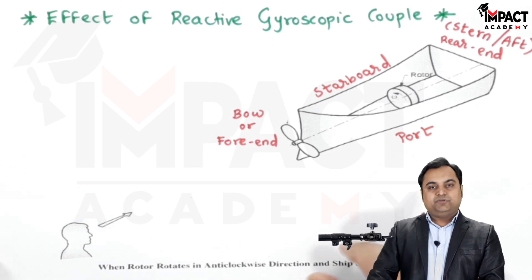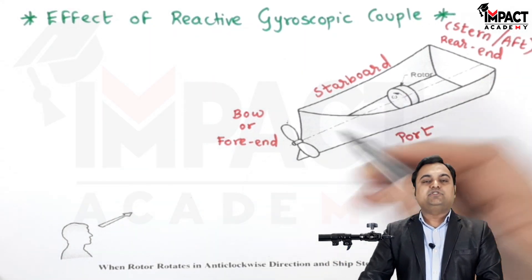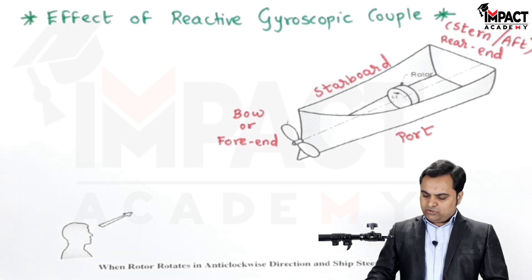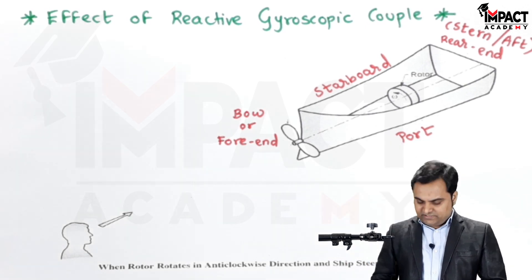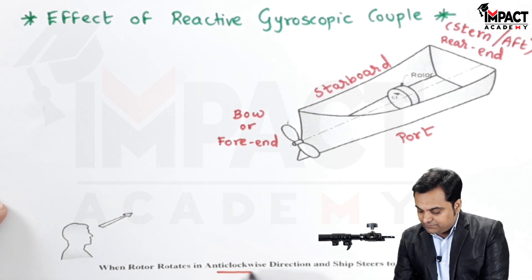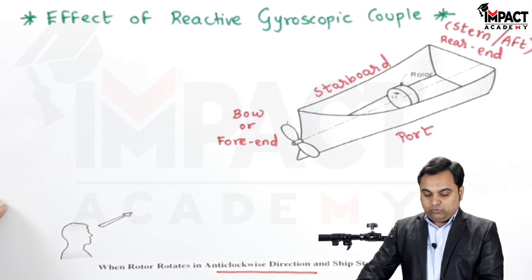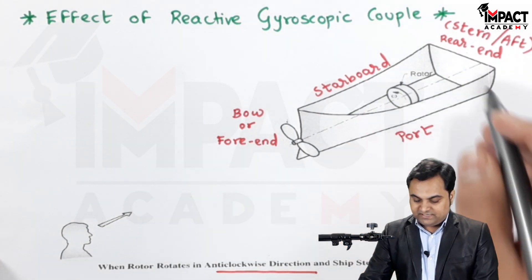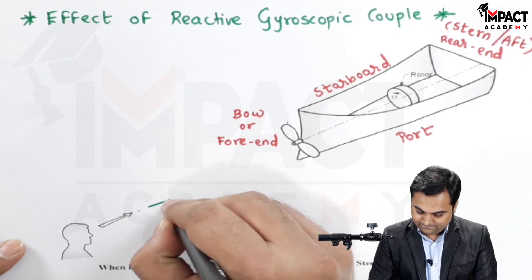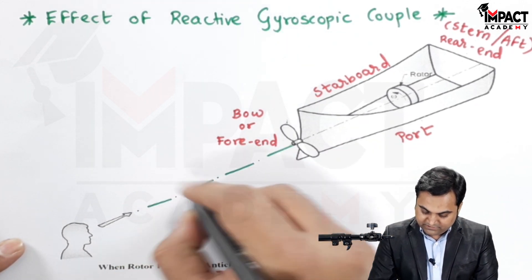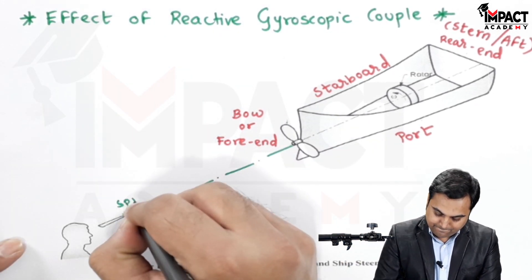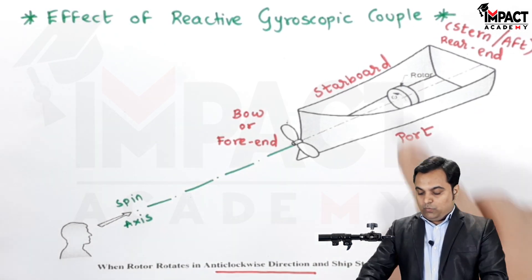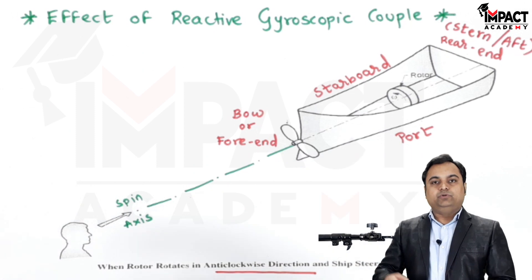The ship has a rotor which can be considered as a crankshaft or a flywheel. In this given case it is rotating in an anti-clockwise direction. The axis of this rotor is called the spin axis.